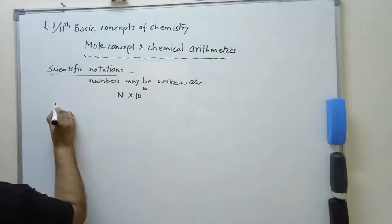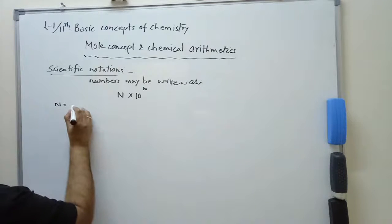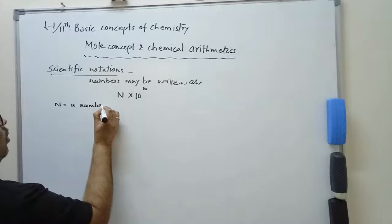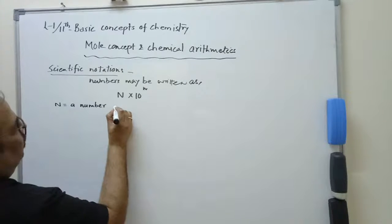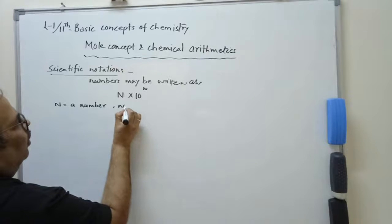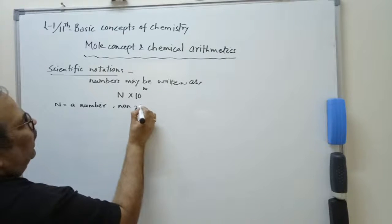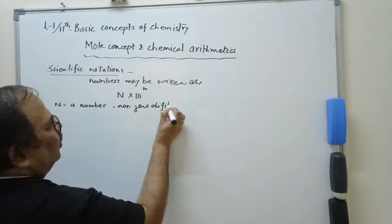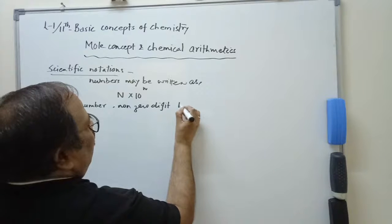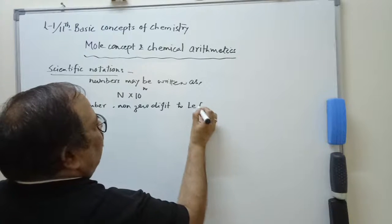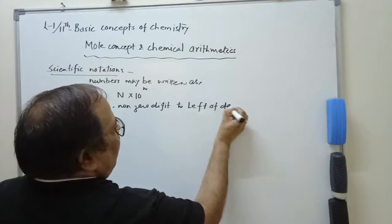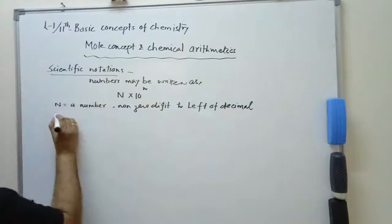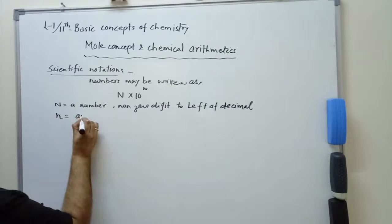Here N is a number with a non-zero digit to the left of the decimal point, and n is an integer.